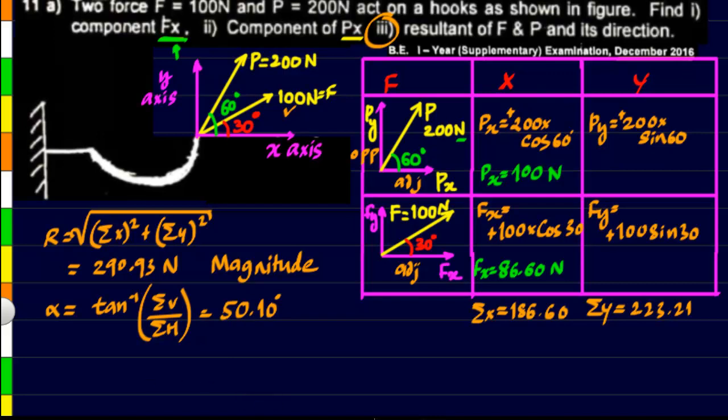So this angle is with the x-axis and when we have to draw the diagram for this, we just simply make the two axes, y-axis and x-axis, and draw our force, the resultant, that is R, the value of R being 290.93 and here this angle being alpha, the value of alpha being 50.10. So that completes our problem.